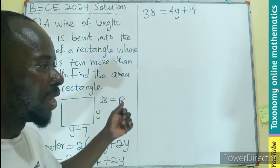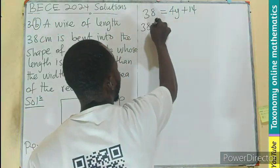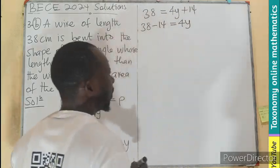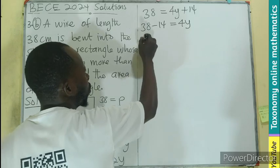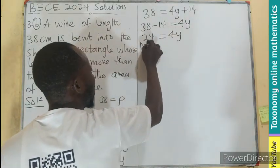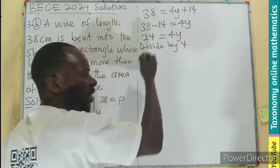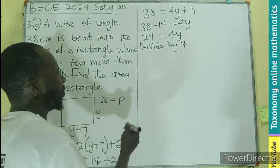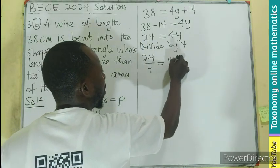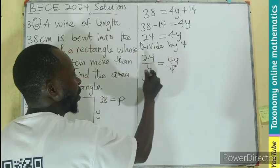Simple equation where we subtract 14 from both sides. That gives us 38 minus 14 equals to 4Y. So 24 equals to 4Y. Divide by 4, which is the coefficient of the Y. 24 divided by 4, 4Y divided by 4, Y here will be equal to 6.